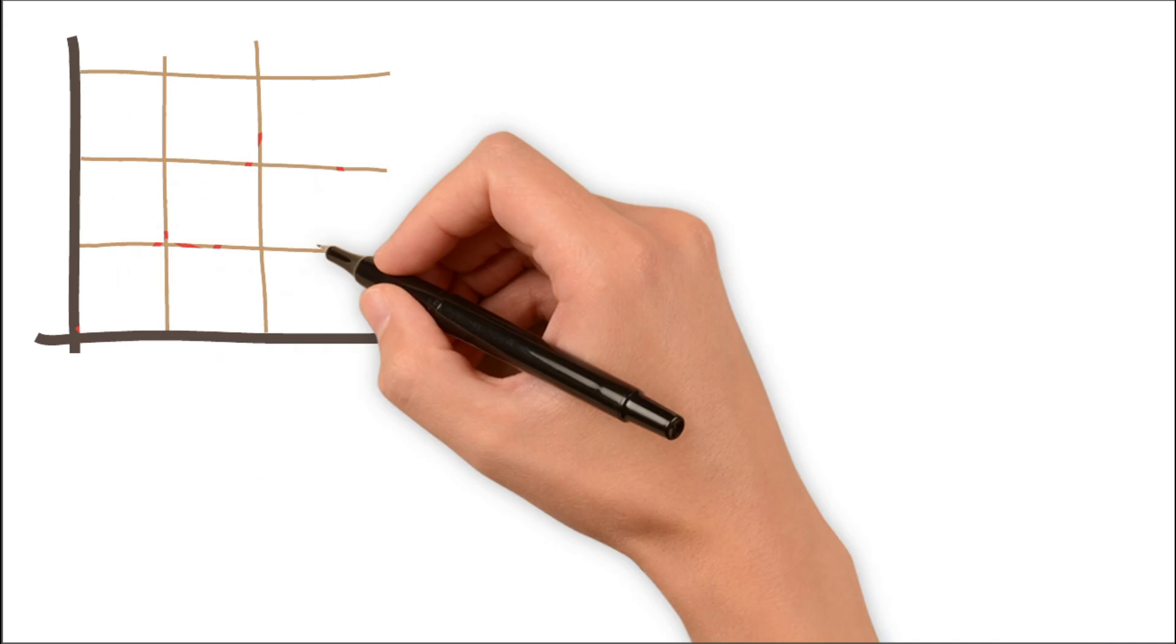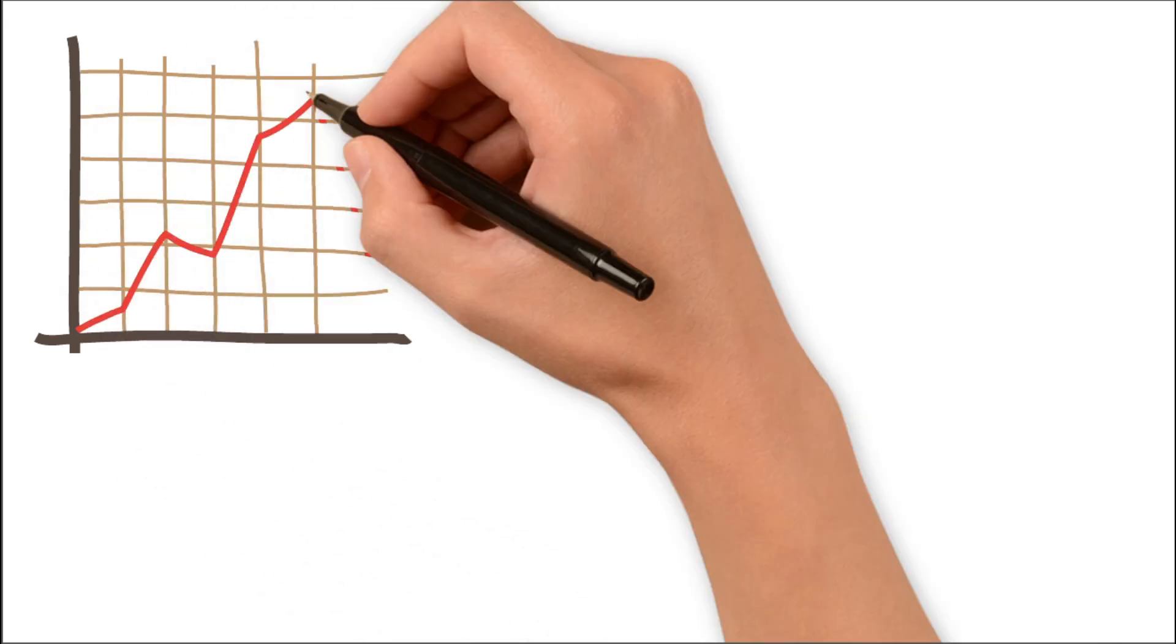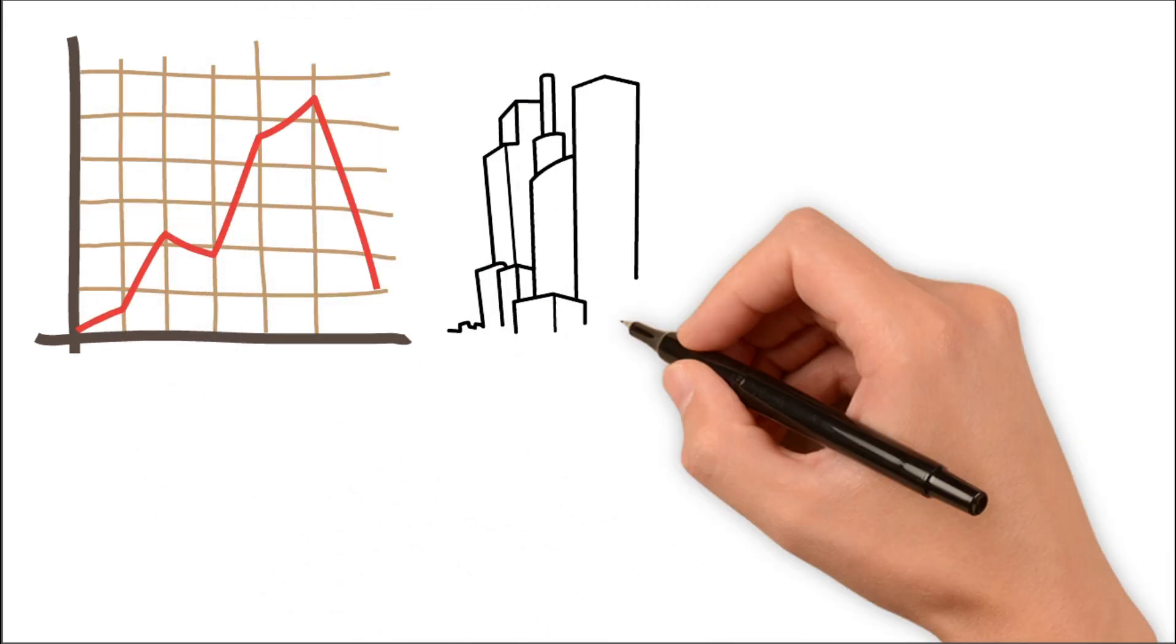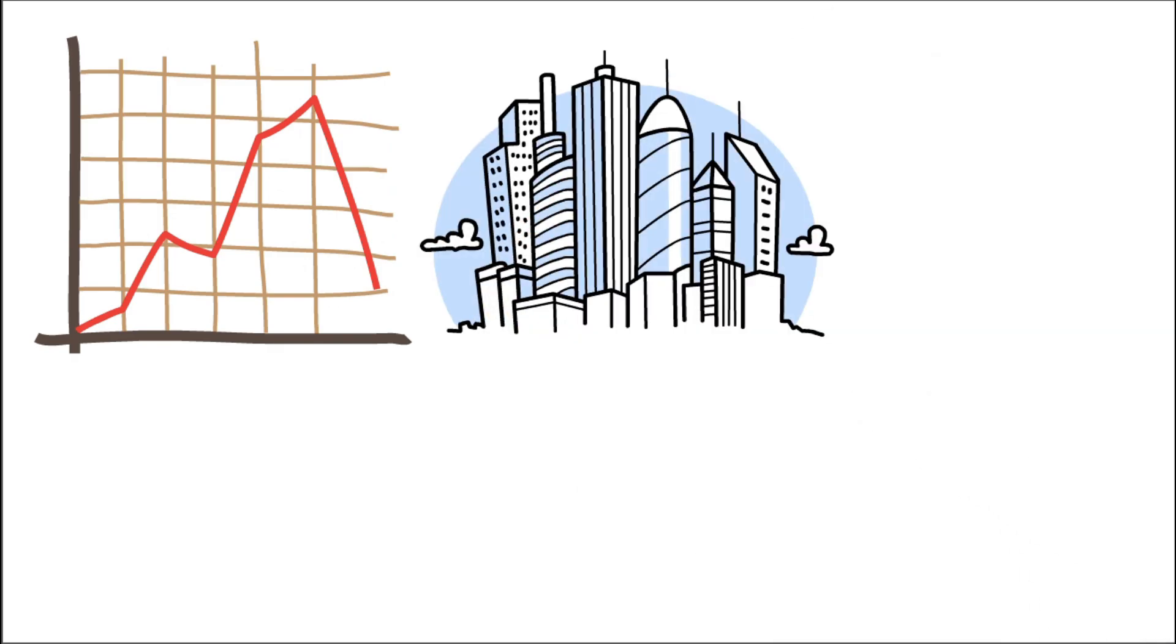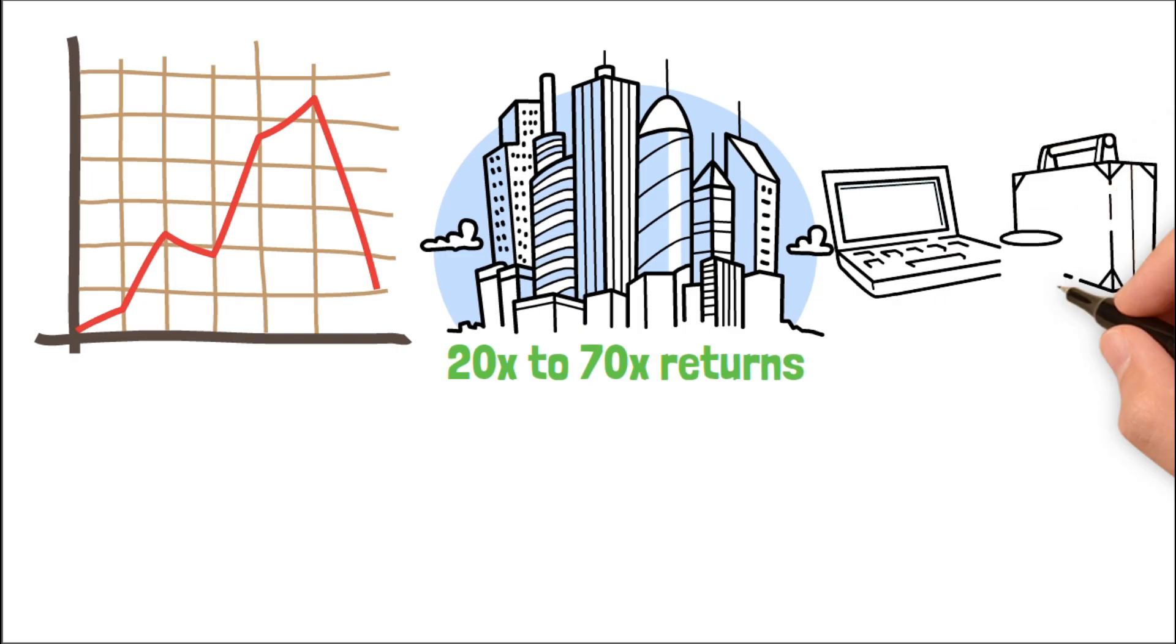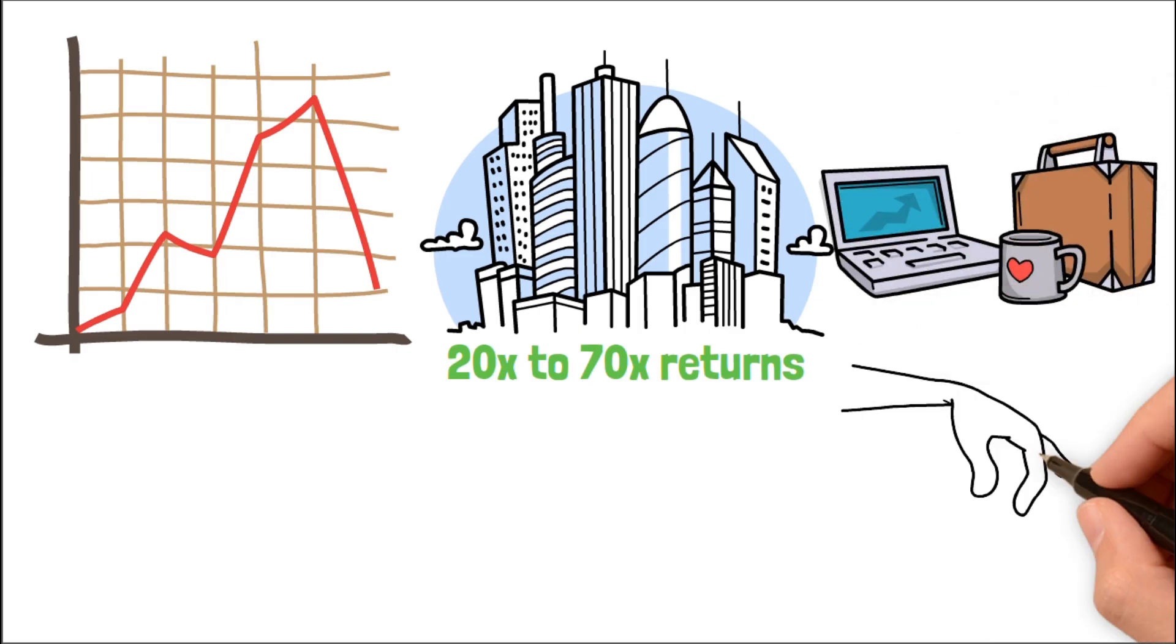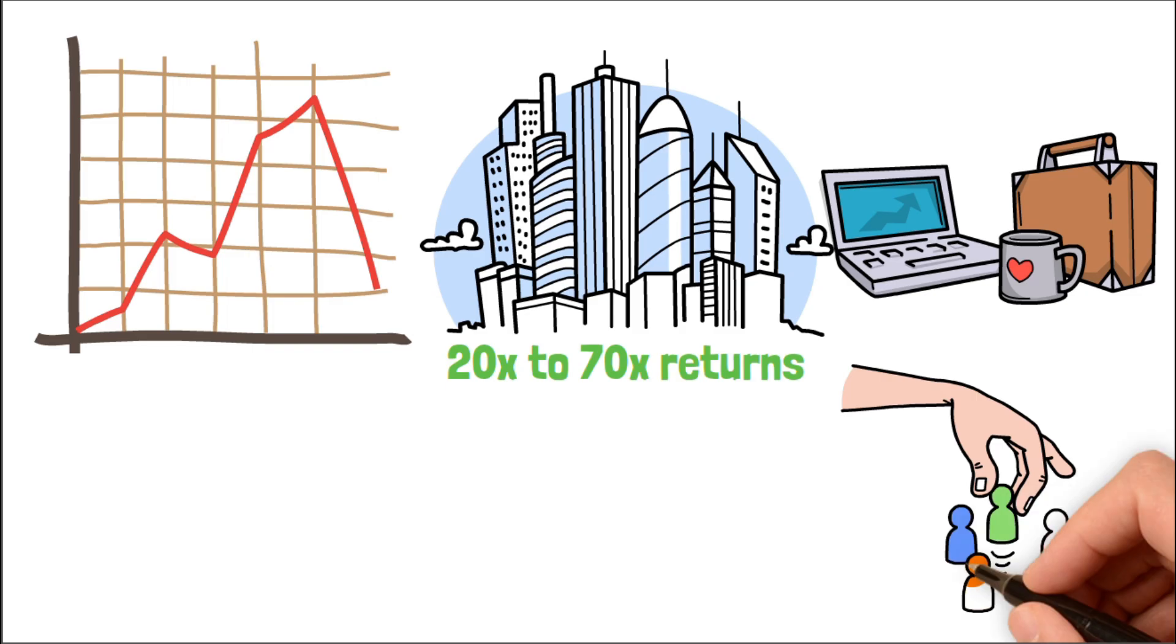Here's the trade-off. This layer is volatile. If quantum hits delays or another player pulls ahead, these stocks could drop hard. But if even one of these companies becomes a category leader, we're talking 20x to 70x returns. That's why this layer gets a meaningful but measured slice of my portfolio. It's not about picking a favorite. It's about positioning where real disruption is already underway.